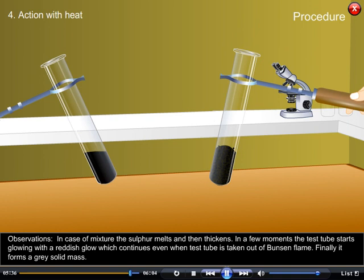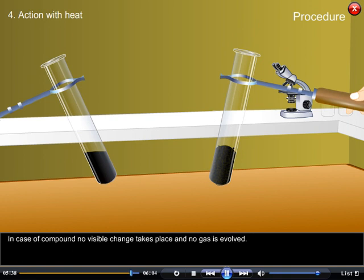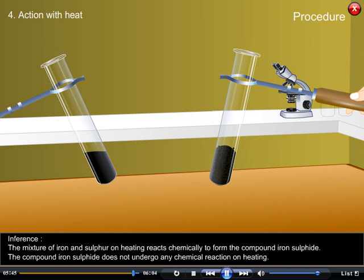In case of compound, no visible change takes place and no gas is evolved. Inference: The mixture of iron and sulphur on heating reacts chemically to form the compound iron sulphide. The compound iron sulphide does not undergo any chemical reaction on heating.